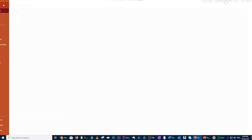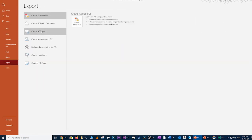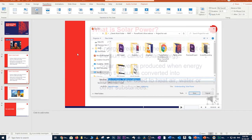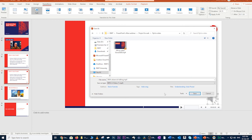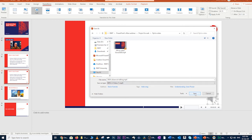I'll go to file, export, create video. I'll stick with the HD 720p size. Make sure I've got use recorded timings and narrations picked. Five seconds is fine for the slides that don't have any narrations or multimedia. I'll then click create video, pick my folder, and then click save.